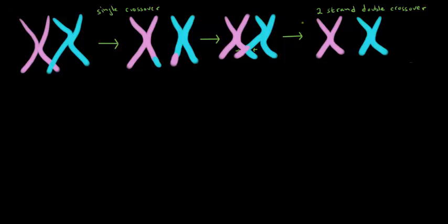It's called a two-strand double crossover because it involves two strands — let's highlight the two strands that were involved: this strand and that strand. And it's called double because crossing over happened twice.